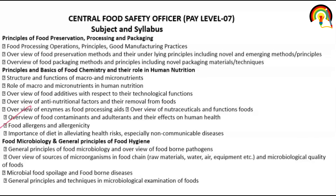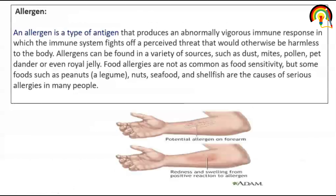Today we will discuss food allergens. An allergen is a type of antigen that produces an abnormally vigorous immune response, in which the immune system fights off a perceived threat that would otherwise be harmless to the body. Allergens can be found in a variety of sources such as dust, mites, pollen, pet dander, or even royal jelly.